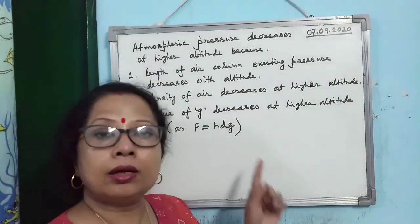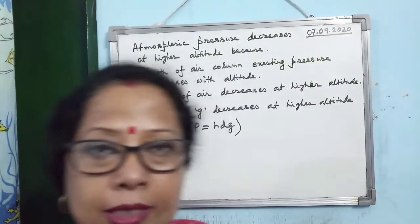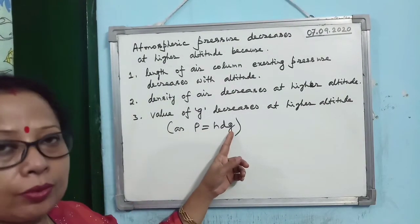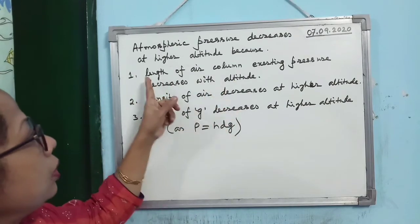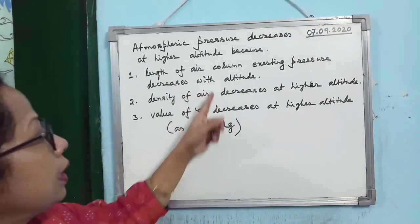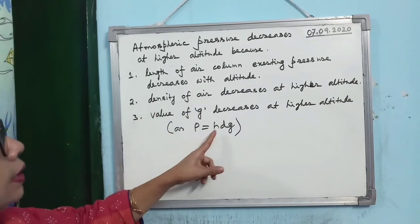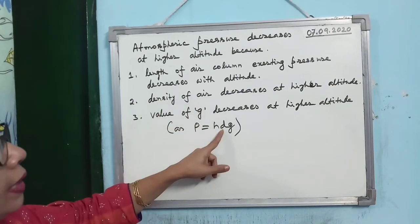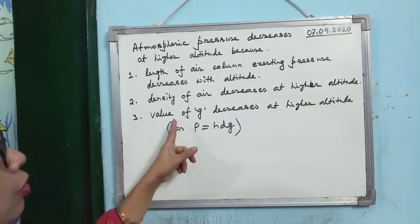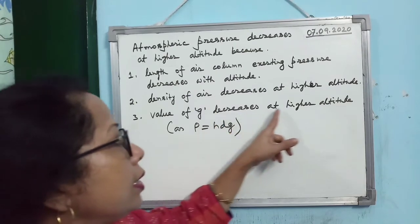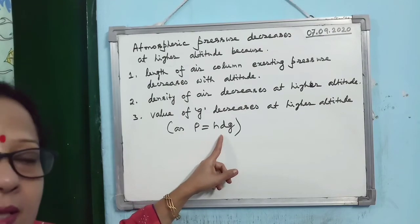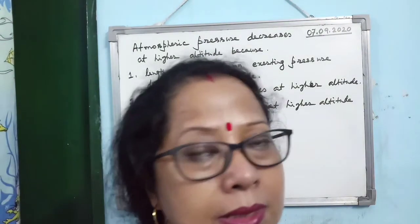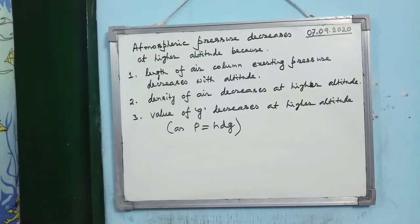Atmospheric pressure is a fluid pressure, given by P = H × D × G. At higher altitude, H (length of air column exerting pressure) decreases, D (density of air) decreases, and G (acceleration due to gravity) also decreases. Since all three factors decrease, atmospheric pressure decreases at higher altitude. This question is very important for your exam.